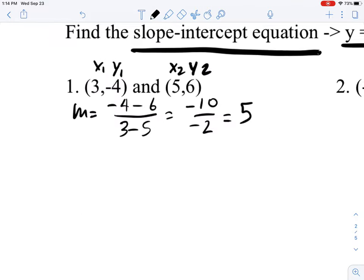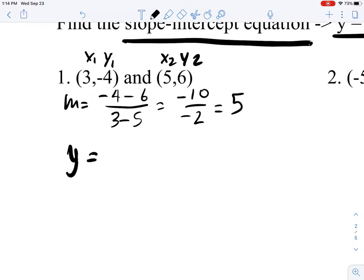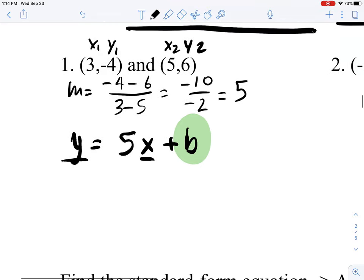Now with that information, we can plug it into our equation: y equals 5x plus b. We need to find out what b is, and the only way to do that is to plug in our numbers for x and y. We have x and y over here, so we just plug it in.